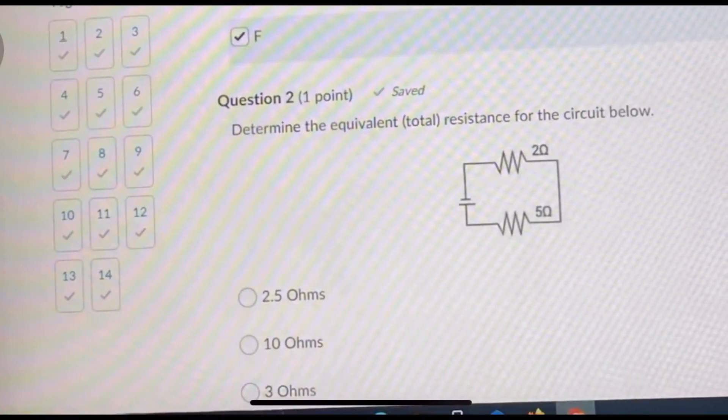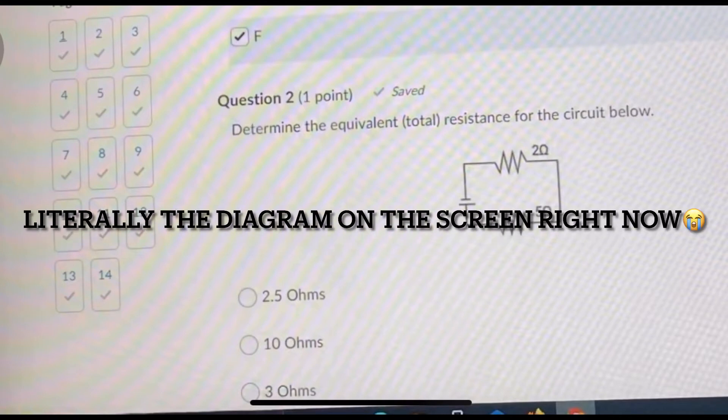Okay, so I kind of sort of didn't get number one, but it was basically just a question about what a series circuit looks like. You can just look that up and figure that out. They're just those circuits that are all connected to each other. There's no other paths for electricity to flow through other than one path.